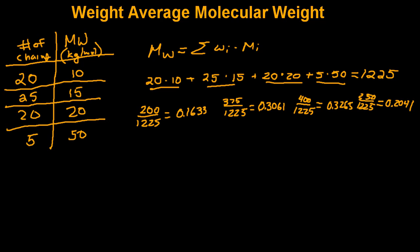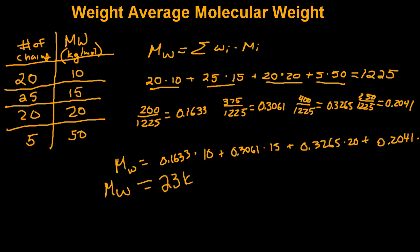So now all we need to do is sum up the weight fraction of each chain length multiplied by its respective molecular weight. So our weight average molecular weight is going to be equal to 0.1633 times 10 plus 0.3061 times 15 plus 0.3265 times 20 plus 0.2041 times 50. And if you do the math, it works out to be equivalent to approximately 23 kilograms per mole.